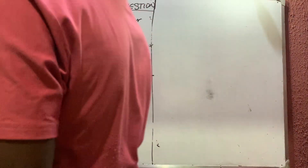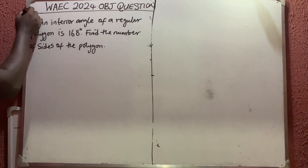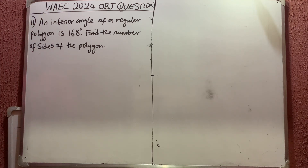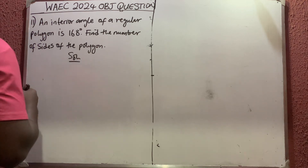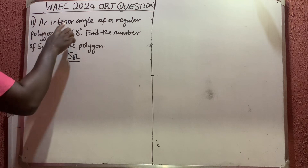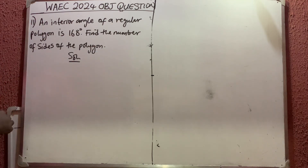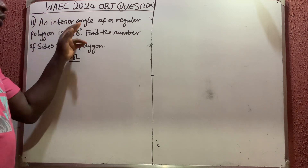Let us quickly solve this WAEC — West African Examination Council — problem. We are now on question number 11. This question says we should find the number of sides of a polygon if an interior angle of a regular polygon is 168 degrees.